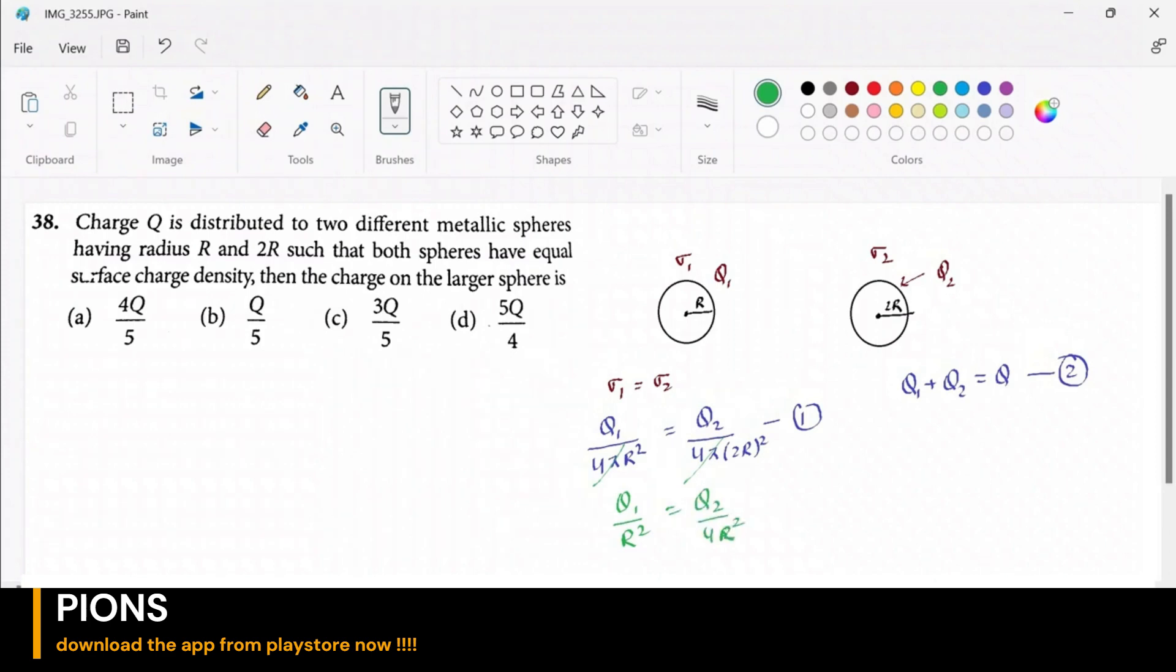This r square cancels with r square, we left with 4 times q1 is equals to q2. I hope this is clear.